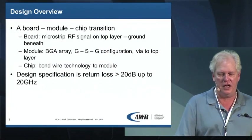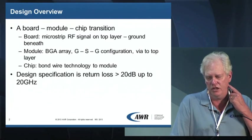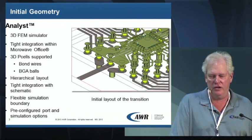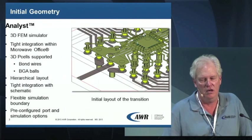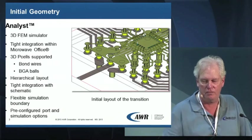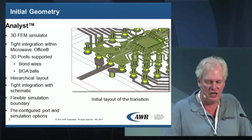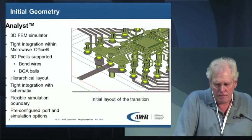The design specifications are we'd like the return loss to be greater than 20 dB through 20 gigahertz. You can see the line on port one there. We're going to use EM simulation — going up through one of the signal BGA balls, on up over to the bond wire and onto the chip where you see the other port. This would be a fairly standard EM simulation using finite element methods, and I assume most of you are familiar with that.